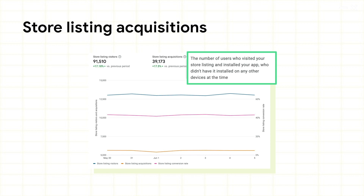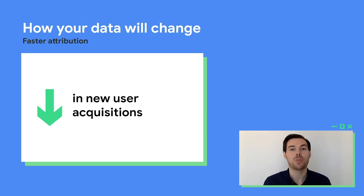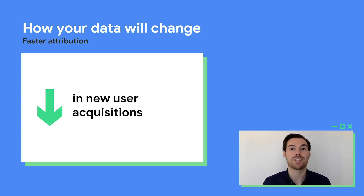Store listing acquisitions are the number of users who installed your app from the store listing and didn't already have your app installed on any of their devices. This number will be lower than your total number of installs, since a user who installs on three different devices will only be counted once. Acquisitions are only counted if the install completes shortly after the user's store listing visit, so some apps may see fewer acquisitions compared to the classic report, which included a longer period. We've made this change to better reflect the effectiveness of your store listing, so you should see stable metrics faster to support more timely marketing decisions.